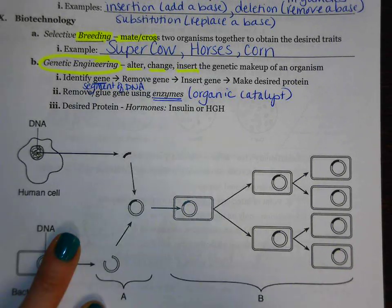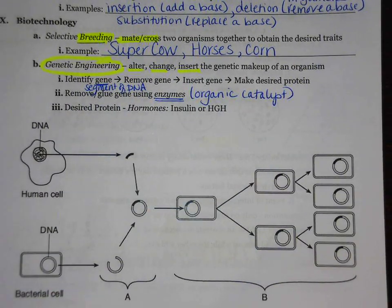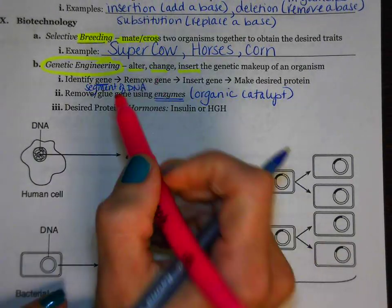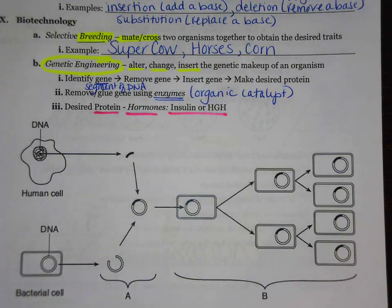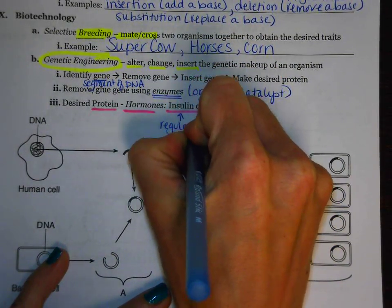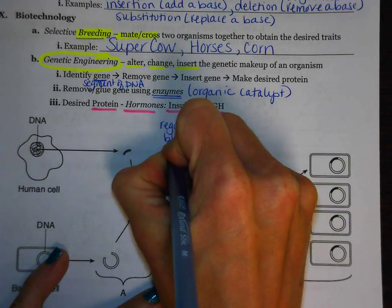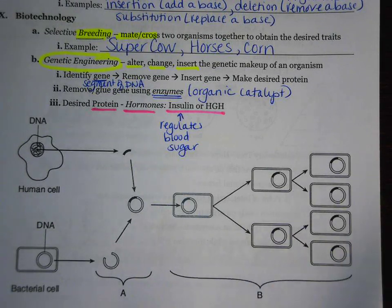Why are we doing this? You have a segment of DNA, and that segment of DNA is going to code for a protein. This gene that we found and identified makes a protein. The proteins we're usually interested in are insulin and HGH. Insulin is responsible for regulating blood sugar. HGH is responsible for growth — human growth hormone — growth of muscles and growth of bones.